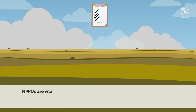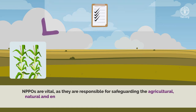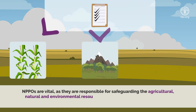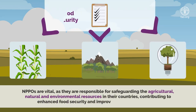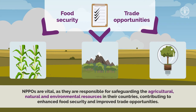National plant protection organizations are vital, as they are responsible for safeguarding the agricultural, natural, and environmental resources in their countries, contributing to enhanced food security and improved trade opportunities.